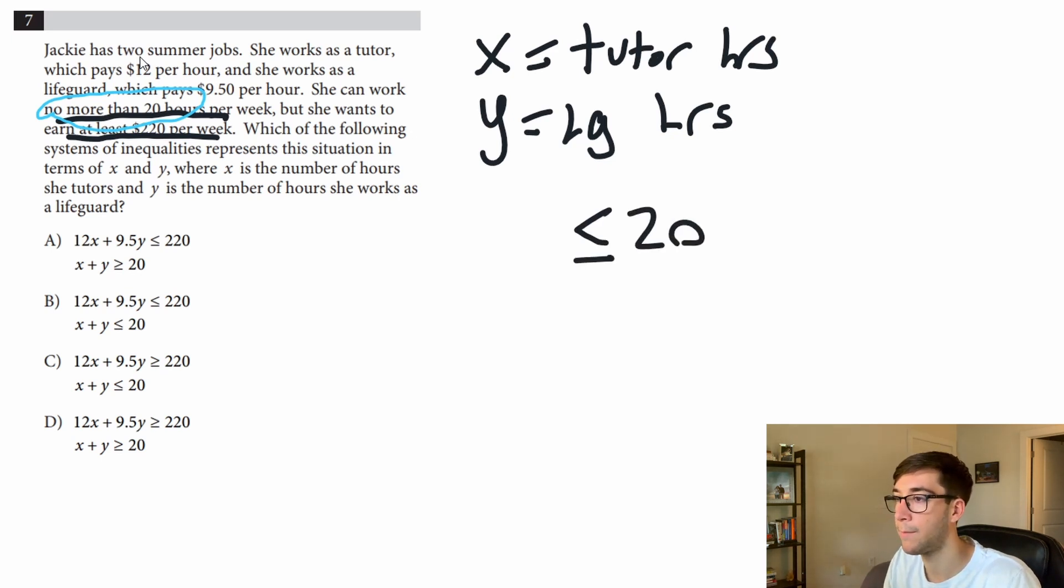So it's less than or equal to 20, and it's talking about hours per week. So we have x and y, those are the hours of her job, so it's going to be x plus y is less than or equal to 20, because the hours she works cannot be more than 20 but can be equal to 20.